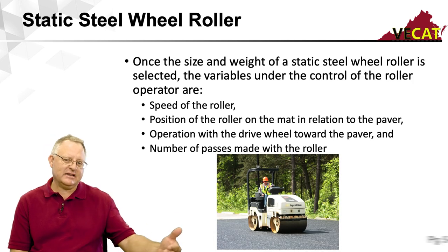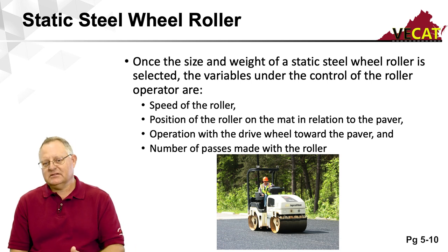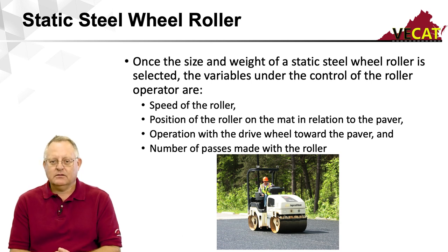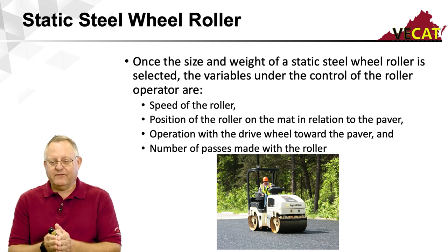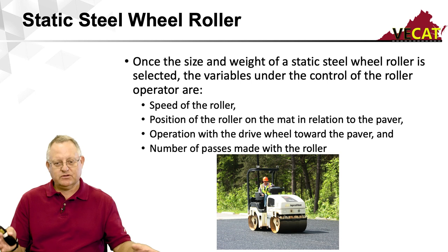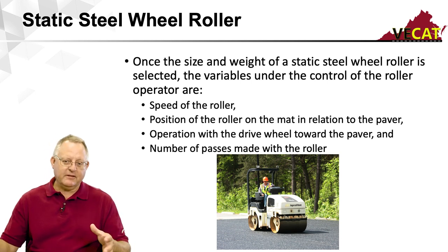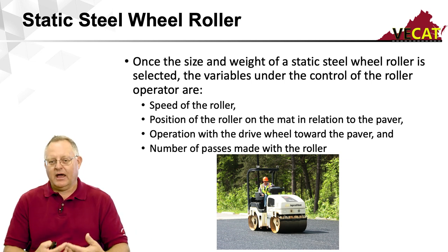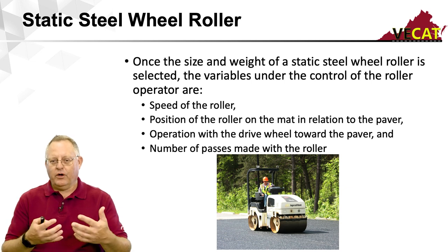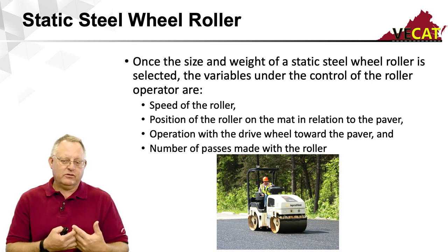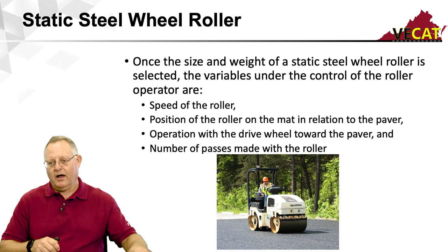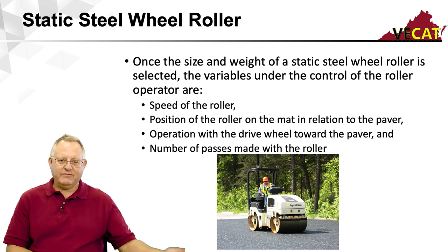The static steel wheel roller is typically a two- or three-drum design. Static simply means we're not vibrating — the vibratory setting is turned off. You can have a two-wheel configuration or a large drum in front with two smaller drums in the back, and vice versa. All the compaction comes from the weight and size of the rollers spread out over the contact area between the drum and the pavement itself.